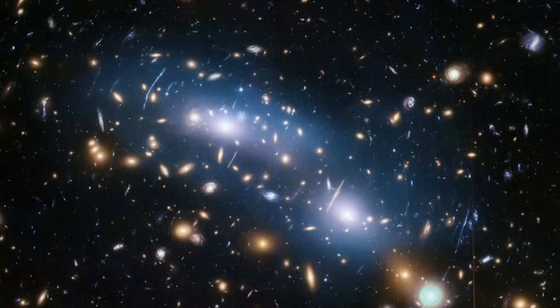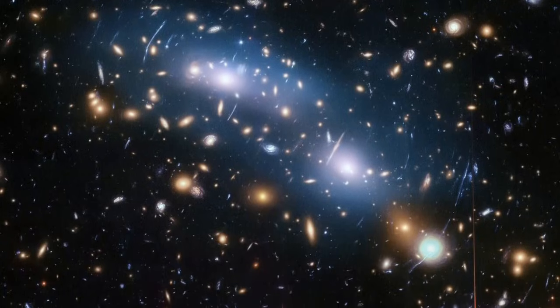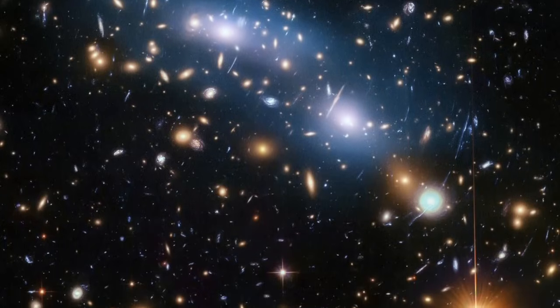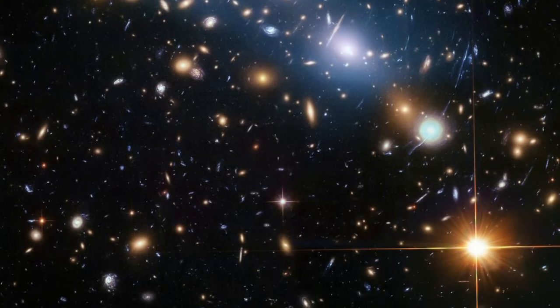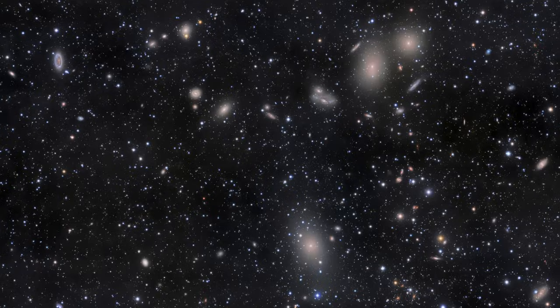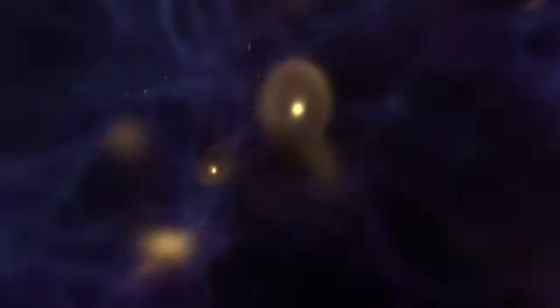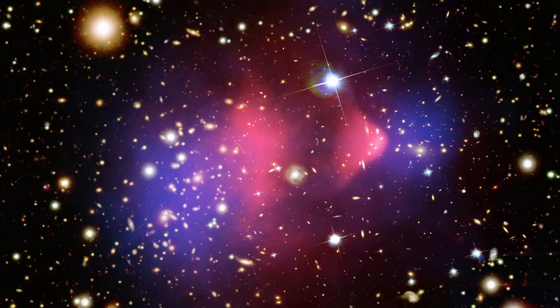I may have undersold El Gordo by calling it gigantic. Its mass is estimated to be 2.1 quadrillion solar masses, roughly analogous to our own Virgo supercluster. Thing is, according to our understanding of how the universe works, a cluster that early shouldn't be that big. More to the point, it also shouldn't be colliding with another cluster at 2,600 kilometers per second, which is what the study estimated its infall velocity to be. And it isn't even the only cluster moving at such speeds.